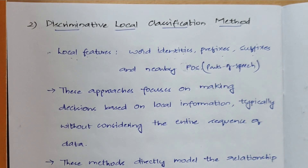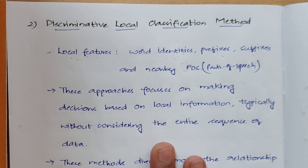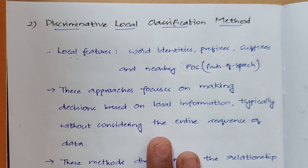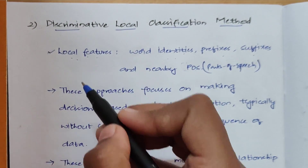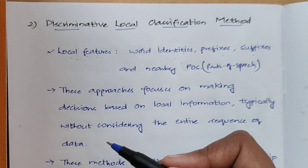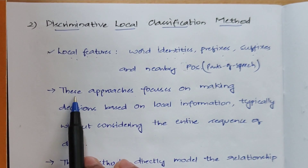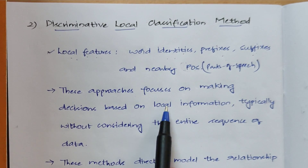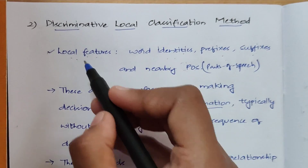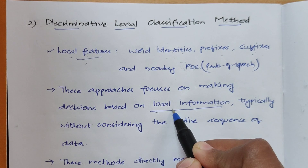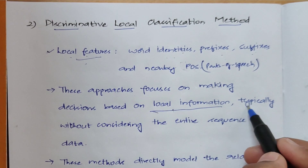In the generative sequence classification method, we have seen that it predicts the labels — the sentence boundary or the topic boundary — based on whatever sequences we have created, using training examples only. But when it comes to the discriminative local classification method, it will only consider the local features of a particular sequence and then predict the labels. These approaches focus on making decisions based on local information, which is nothing but local features.